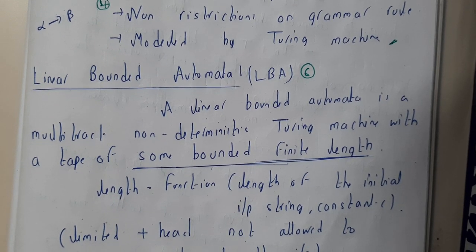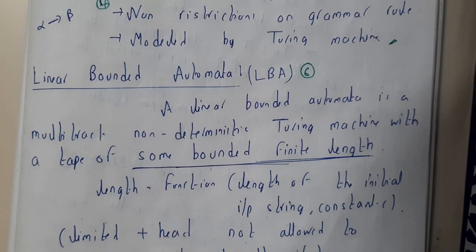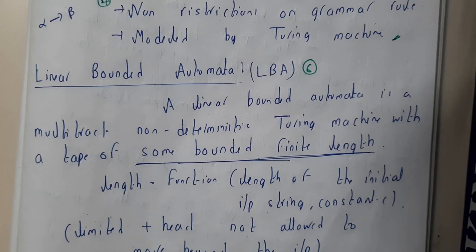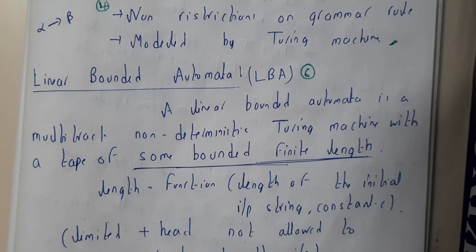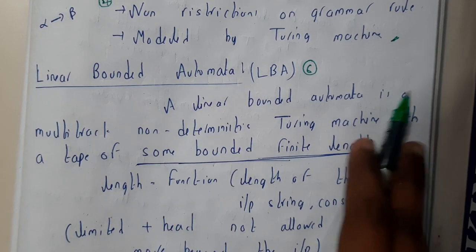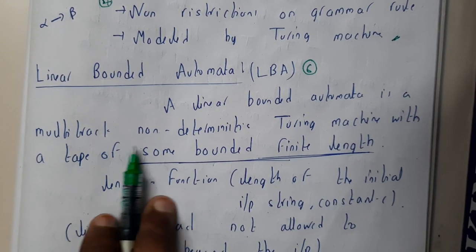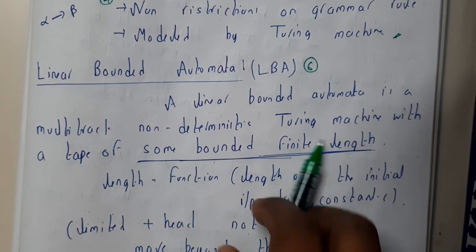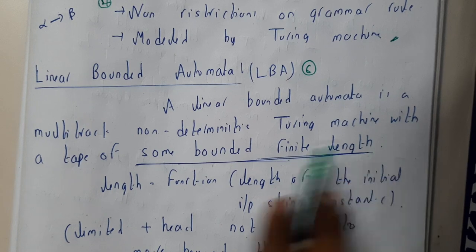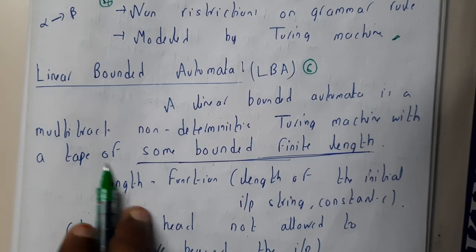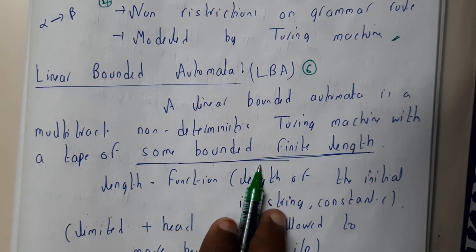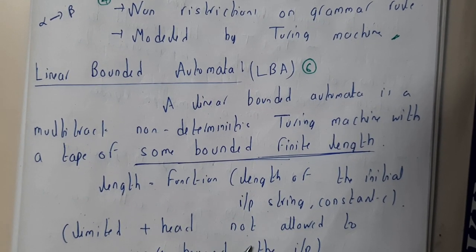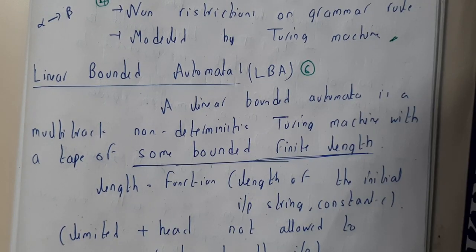Hello guys, we are back with our next tutorial. In this tutorial, let us go through linear bounded automata. A linear bounded automata is a multi-track non-deterministic Turing machine with a tape of some bounded finite length.